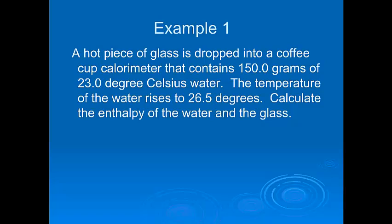Here's an example. We have a hot piece of glass — heated in a flame — and we're going to put it into a coffee cup calorimeter containing 150 grams of water at 23 degrees Celsius. We put this hot piece of glass in, stir it, and watch the temperature go up. It doesn't go up very much because water can gain a lot of heat before its temperature rises, but it does go up to about 26.5 degrees. Because the temperature of the water increased, we know the water gained some heat — it took it from the glass. So we want to figure out the enthalpy — the amount of heat that the water gained and what direction it went.